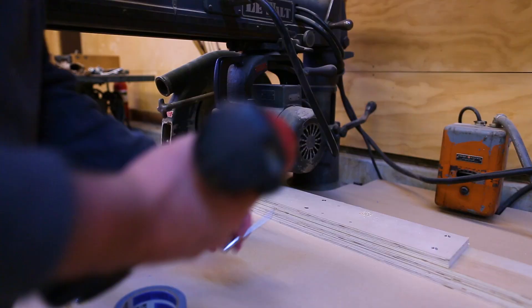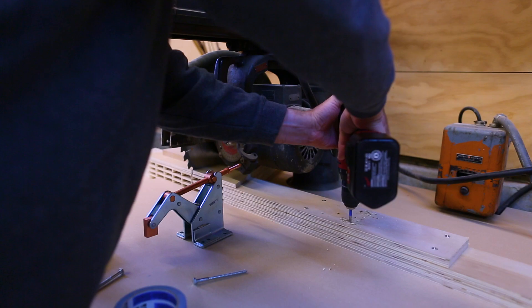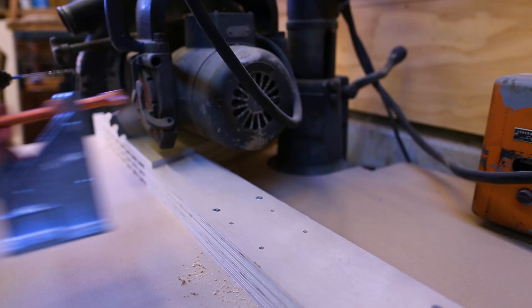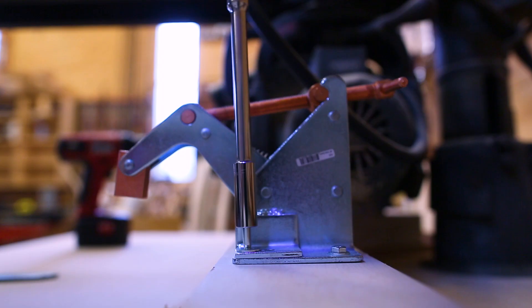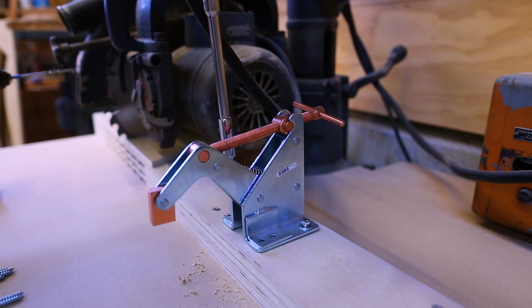Since I've got the radial arm saws up and running, there were a few more things I wanted to do for finishing up little projects. One was to add some clamps to the fence so that I can hold down workpieces and not have to worry about trying to hold things with my hands as much.